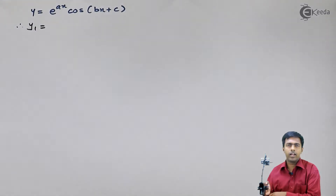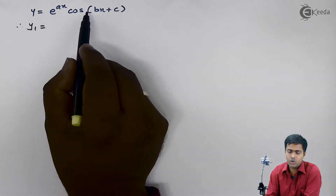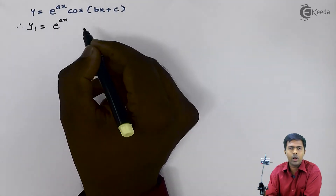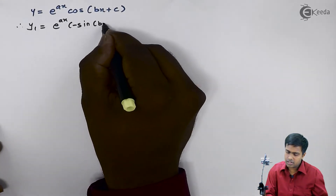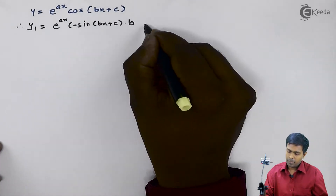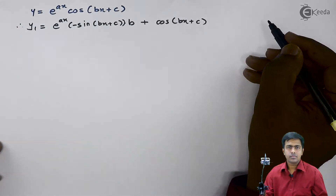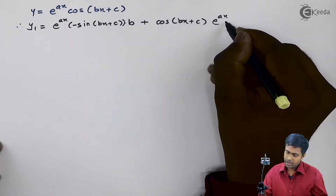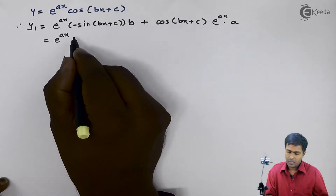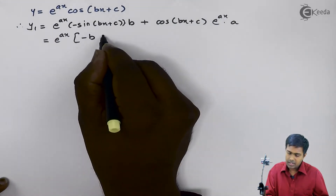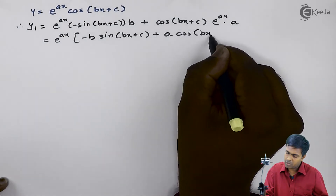The first derivative y1 will be found by applying the product rule formula on u into v. This function is u and this is v. So we get e raised to ax, that is u, as it is, times the derivative of v — the derivative of cos is minus sin of bx plus c into b — plus cos of bx plus c as it is, times the derivative of e raised to ax, which is a. Taking e raised to ax common, inside the bracket we get minus b sin of bx plus c plus a cos of bx plus c.